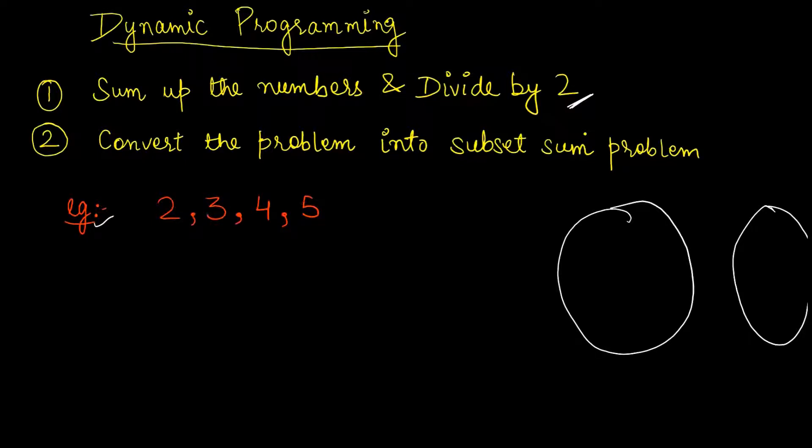Let's try to understand this with an example. Here we have four numbers: 2, 3, 4, 5. So what I'll do, as per first step, I'll sum up the numbers. 2 plus 3 is 5, plus 5 is 10, equals 14. So I'll write here sum is equal to 14. And as I have to divide it into 2, I'll divide this sum by 2, so that I have 7.